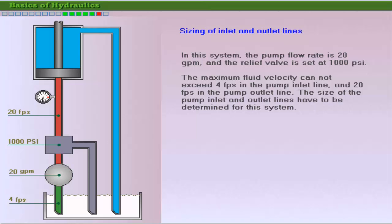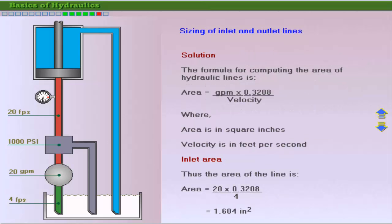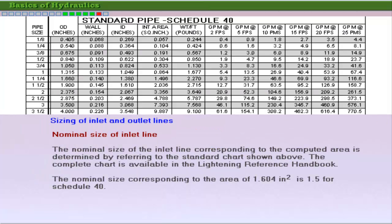The area of the pump inlet and outlet lines can be calculated by using the following formula. In order to find the nominal size and the schedule number of the pipe corresponding to the calculated area, refer to the steel pipe characteristics chart in the Lightning Reference Handbook. The minimum nominal size for the inlet line corresponding to the computed area of 1.604 square inches is 1.5 inch for Schedule 40. As the pressure at the pump inlet is very low, the pressure rating of the inlet line is not checked.